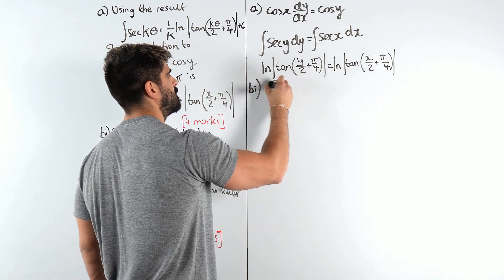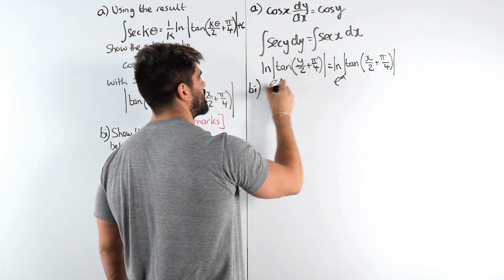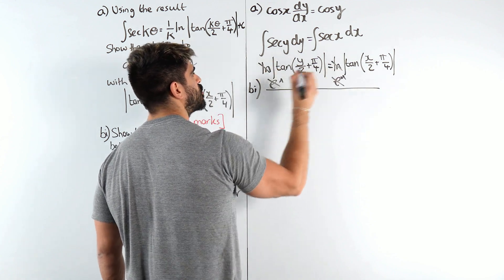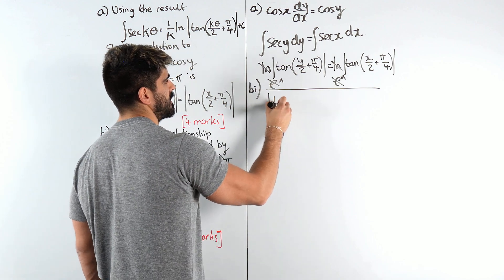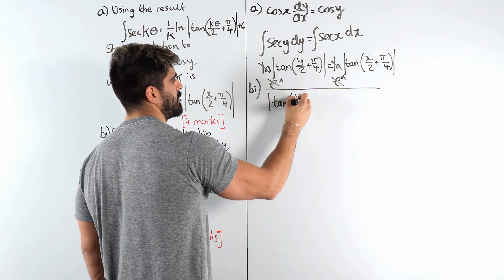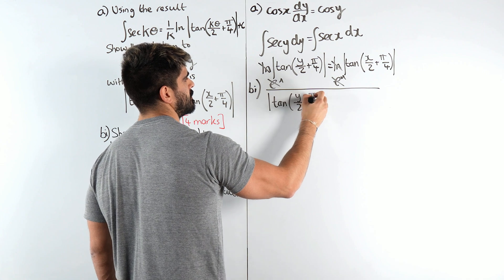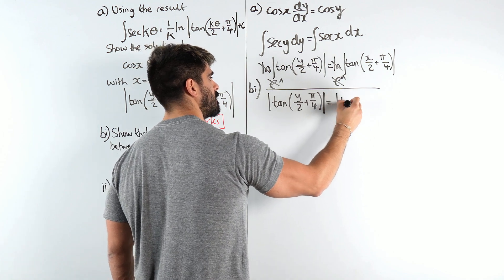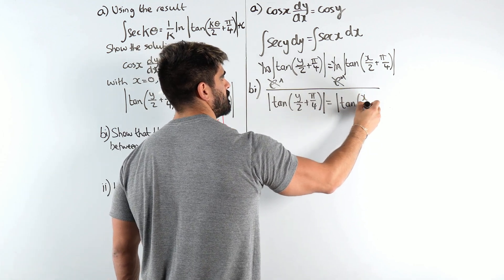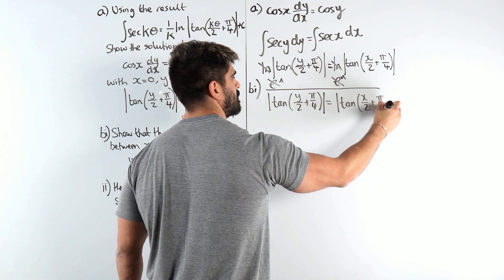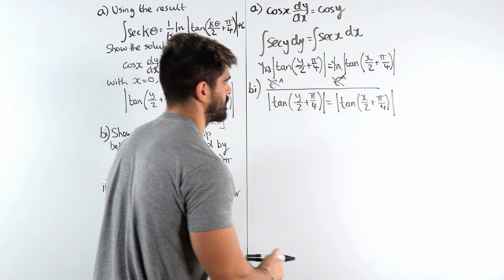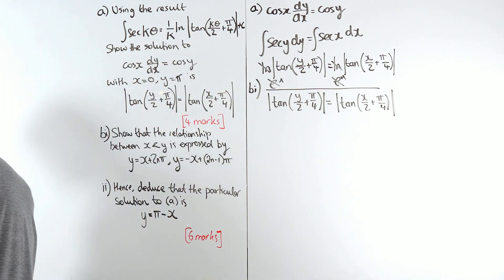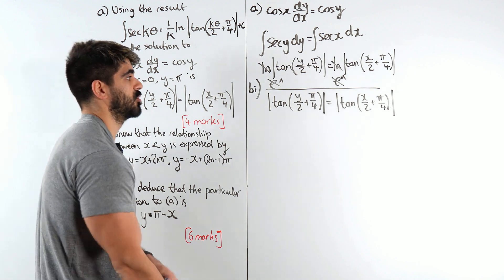Now the first thing we should be doing is getting rid of ln by doing e to power both sides but the modulus does not disappear. We have to respect the domain and range of that original function.